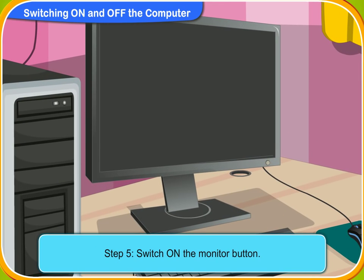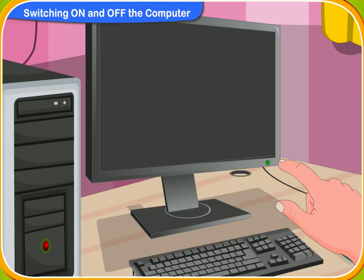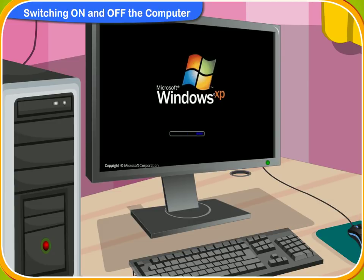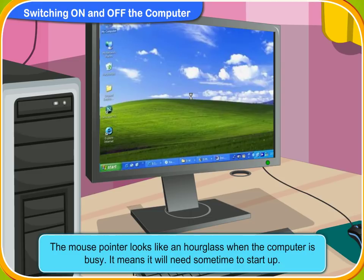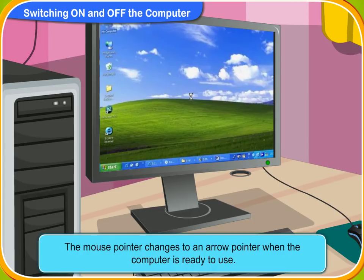Now, switch on the monitor button. Yes, I have switched it on. A green light is glowing, but nothing has appeared on the screen. Relax Rini, it may take some time to show the main screen as the system is booting up. Look, the computer screen desktop is appearing on the monitor. The computer is starting up. Look Rini, this is the mouse pointer. It now looks like an hourglass. It means that the computer is busy and will need some time to start up. Now, the hourglass has changed to the arrow pointer. This means the computer is now ready. We can start working on it.